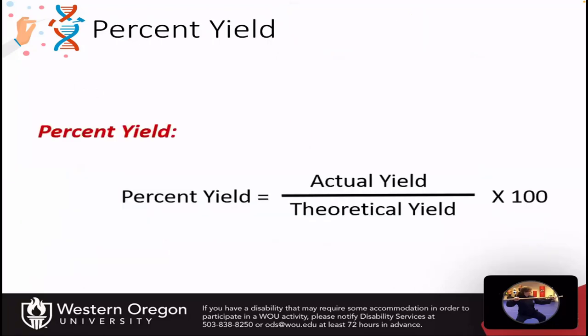We'll do a practice problem with that in just a minute. But I also want to remind you of percent yield problems from general chemistry. Finding percent yield: we have the actual yield over the theoretical yield times 100.